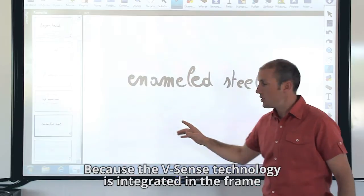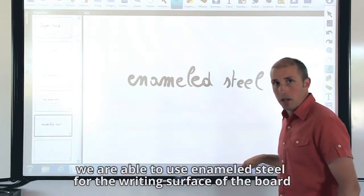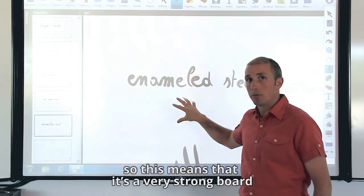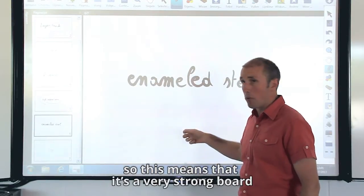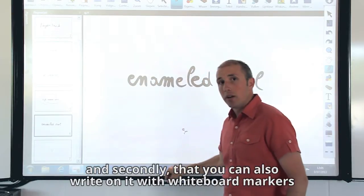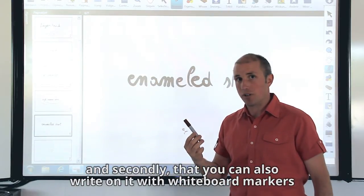Because the Vsense technology is integrated in the frame, we are able to use enameled steel for the writing surface of the board. So that means there is a very strong board. And the second one, you can also write with whiteboard markers on it.